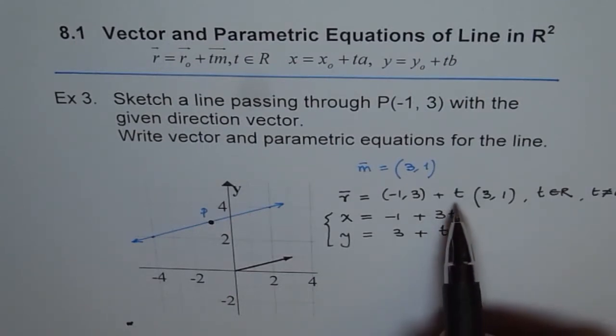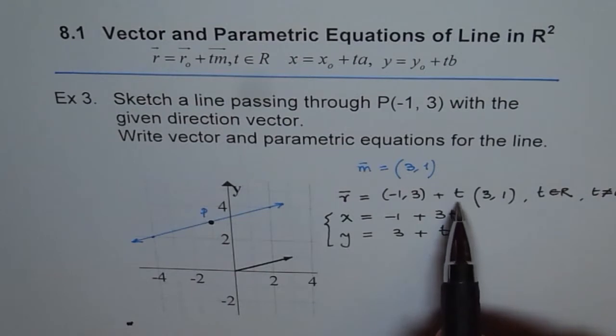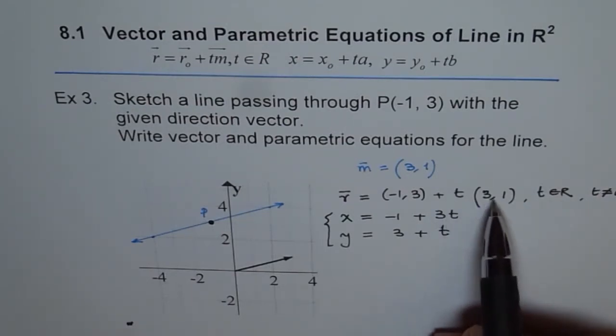So in the vector equation, t is a scalar multiple, right? And it tells us that line has infinite number of points since t belongs to real numbers, and so it could be infinite number of multiples of this direction vector.